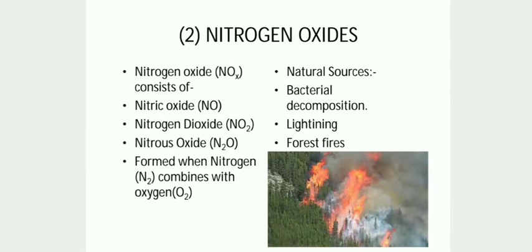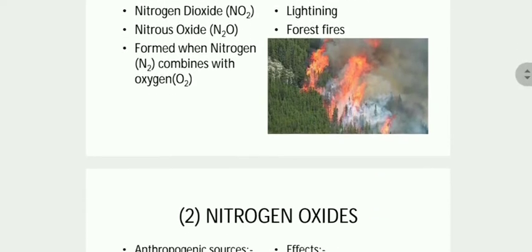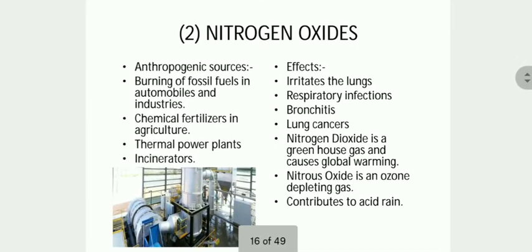Nitrogen oxides: natural sources are bacterial decomposition, forest fires, etc. Anthropogenic sources are chemical fertilizers, thermal power plants, etc. Effects of nitrogen oxides include irritation of lungs and contribution to acid rain.